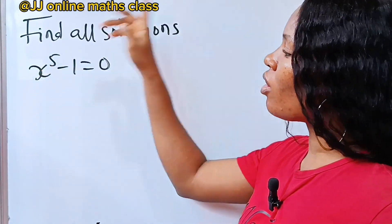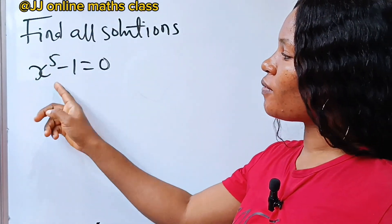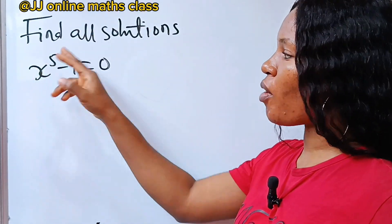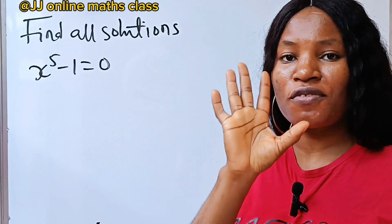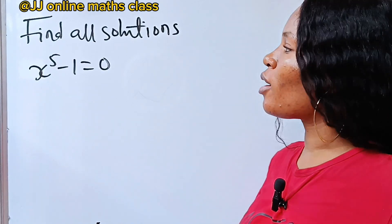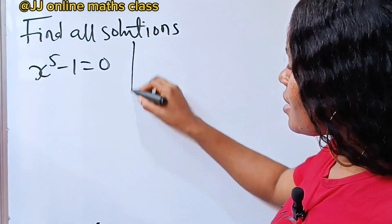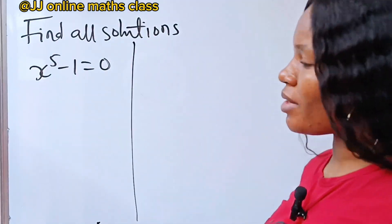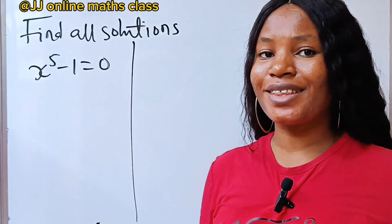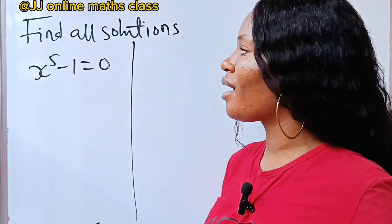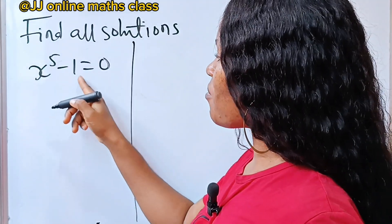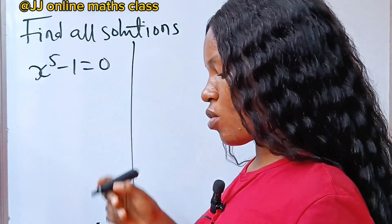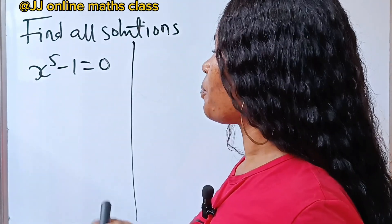We have to find all the solutions of this. This is x to the power of 5, which means we need 5 values of x. Welcome to today's class. Let's get to the business of the day. So x to the power of 5 minus 1 is equal to 0.